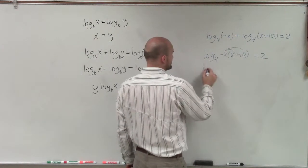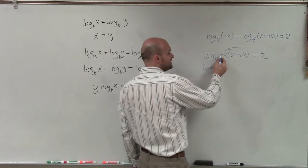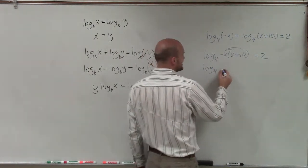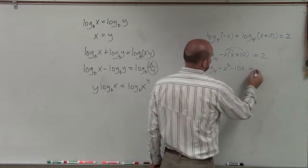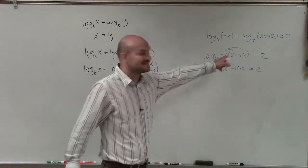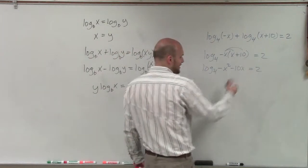Now I can apply the distributive property. So I have log base 4 of negative 1 times x times x is going to be negative x squared minus 10x equals 2. Be careful. That's x times x we know is x squared, and then that is also being multiplied by negative 1, so it's negative x squared.